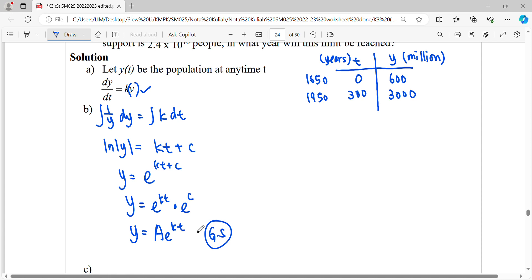Then we substitute the information given here. Our variables are y and t. The information here is for us to find the constants A and k. For the first information, we substitute t equals 0, y equals 600. E to the zero gives 1, so A equals 600.